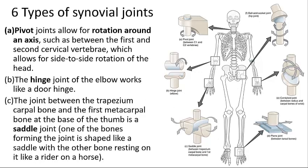There are six types of synovial joints: pivot, hinge, saddle, plane, condyloid, and ball-and-socket. Each is described based upon the shape of the articulating surfaces of the bones. A pivot joint has a rounded end of a bone that protrudes into a sleeve or ring composed of bone or ligament — the proximal radioulnar joint and the dens of the axis at the atlas are examples.